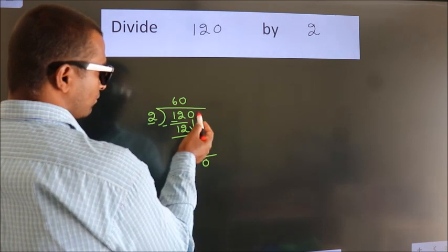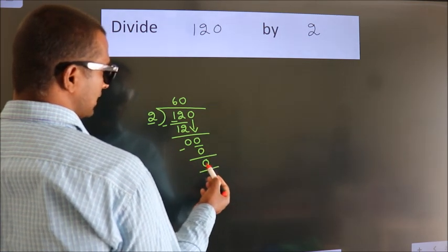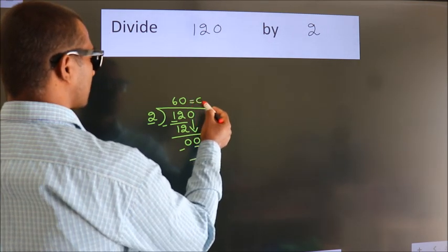After this, no more numbers to bring it down. And we got remainder 0. So this is our quotient.